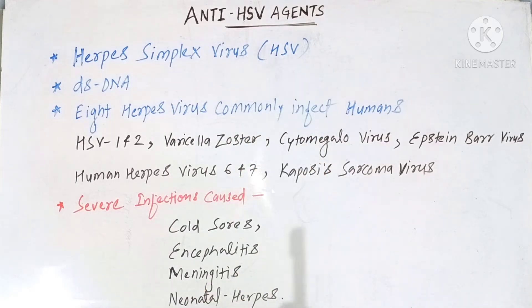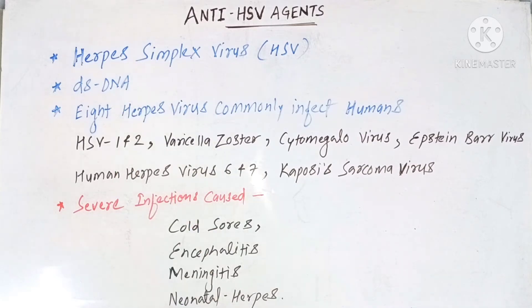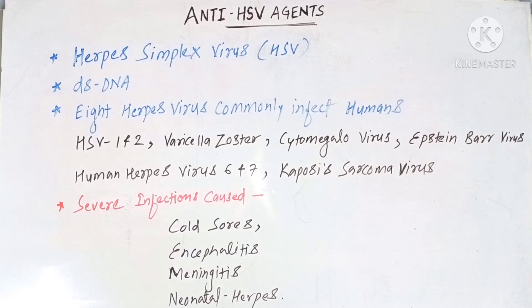So what is herpes simplex virus? It is a double-stranded DNA-containing virus, meaning the genetic material present in this virus is double-stranded DNA. This DNA is converted into mRNA, and then mRNA is again converted into a specific protein.